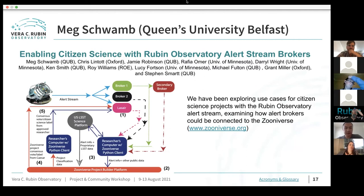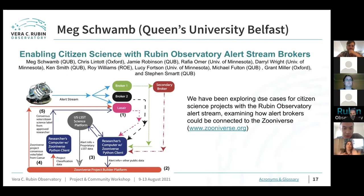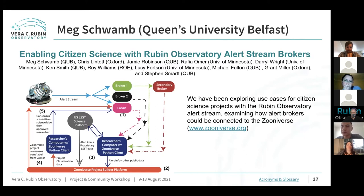We've developed a framework — shown in the left figure — where you take the alert stream to your favorite broker. In my case that's LASAIR, which provides annotations and extra data. The researcher can then use a Python API we built to connect data to Zooniverse. The idea is it runs on the researcher's computer, so no broker or Zooniverse needs any extra machinery. You receive the stream, do what you want with the alerts, add extra datasets, and upload to Zooniverse.